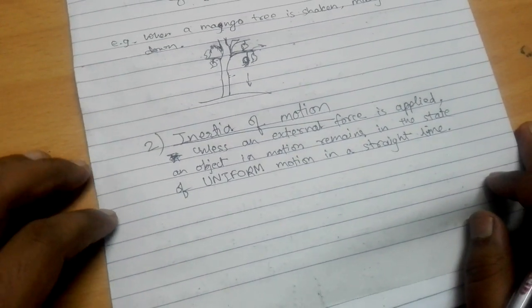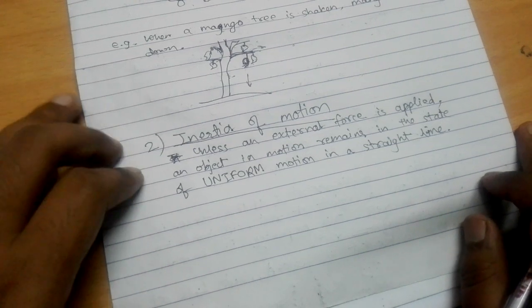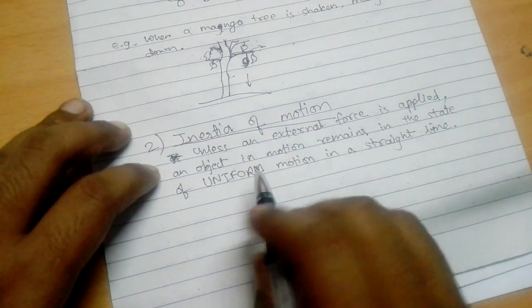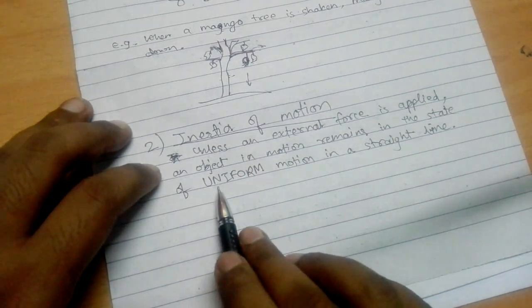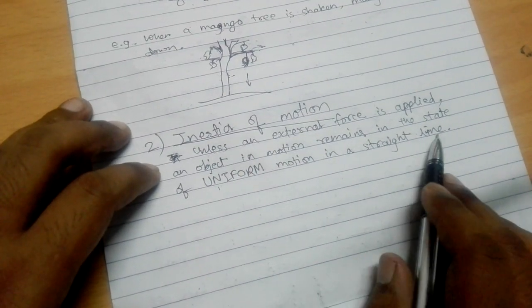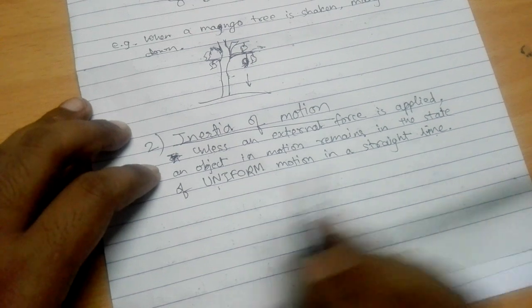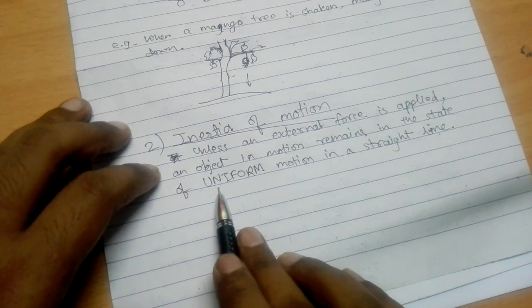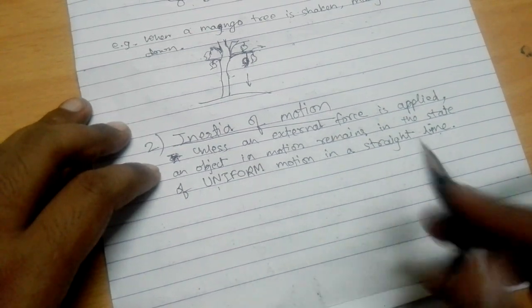Another example: when a running person tries to stop immediately, they fall forward. When their feet are strangled or immediately stopped, the upper body is still in motion due to inertia of motion. As a result, the upper body part falls forward. Also, an electric fan keeps on rotating when it is switched on, but as soon as you switch it off, it does not stop immediately. Its speed decreases gradually and finally it stops — this is also because of inertia of motion.